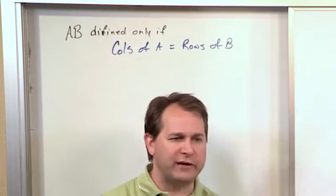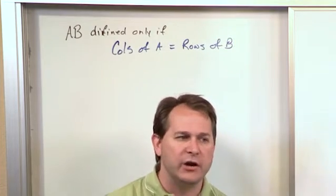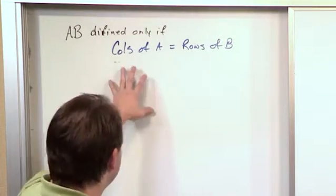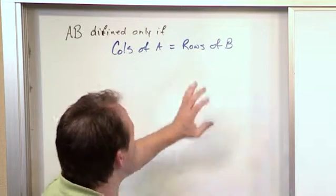But as you get more practice, when you try to multiply things together and you know how to do it, you'll realize when it doesn't work. And the case when it doesn't work is when the columns of matrix A do not equal the rows of matrix B.